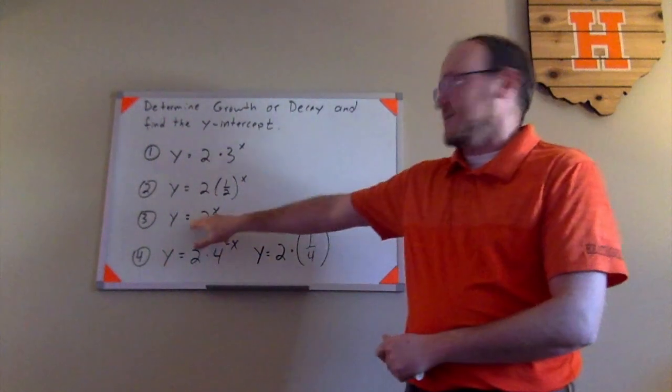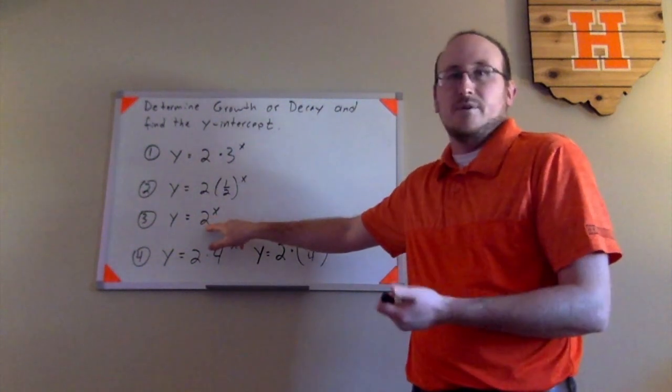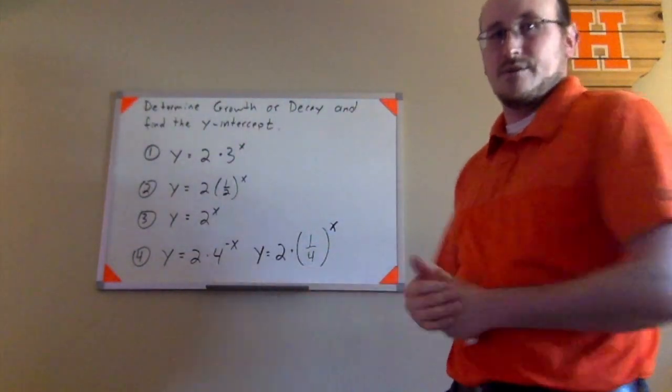Again, just be careful. Sometimes when there's not a number written there, people will jump to conclusions. They'll either say 0 or they'll just put this number instead of remembering that, hey, that could have been written as 1 times the rest of the function.